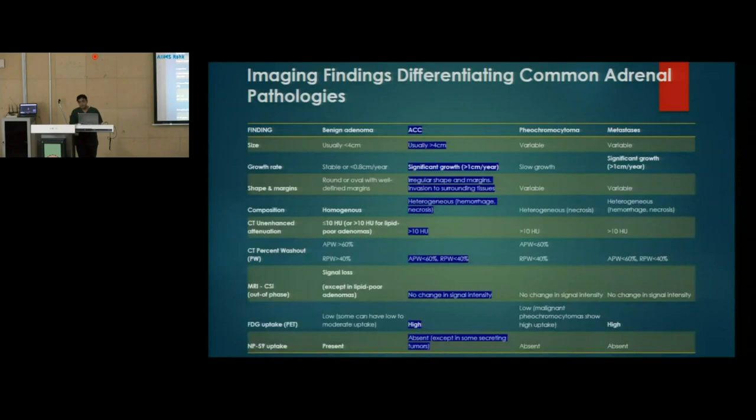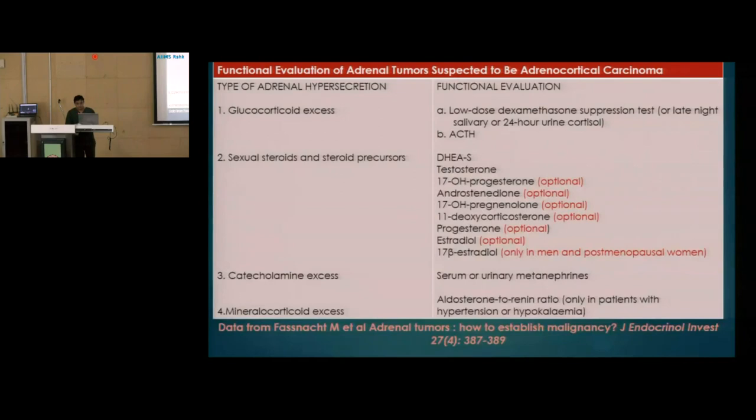Regarding imaging findings that differentiate adrenal pathologies: in this case, there was a significantly large mass with irregular shape and margins, heterogeneous composition with hemorrhagic areas and necrosis, and percent washout less than 60% absolute and less than 40% relative — all suggestive of adrenocortical carcinoma.